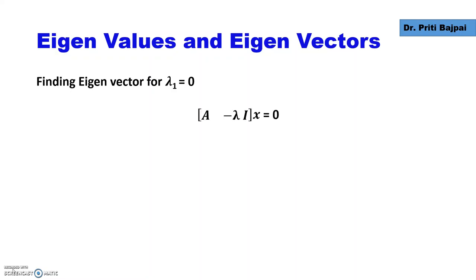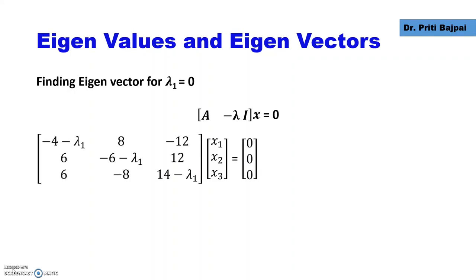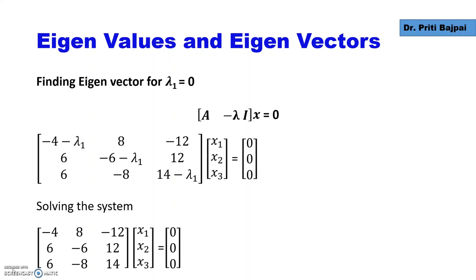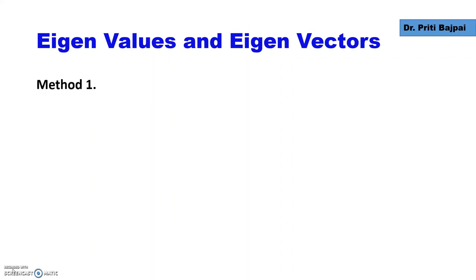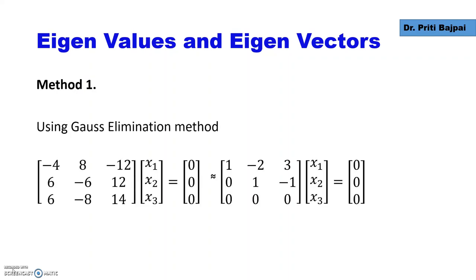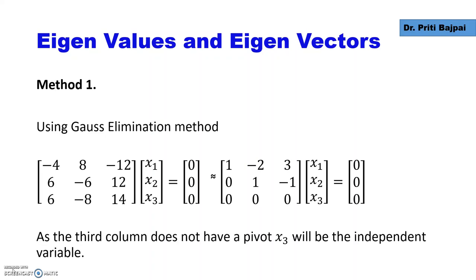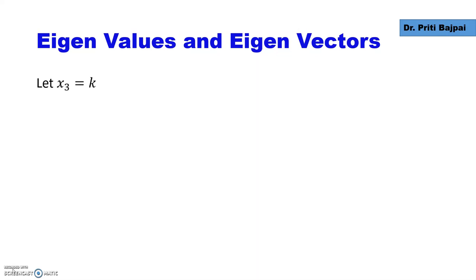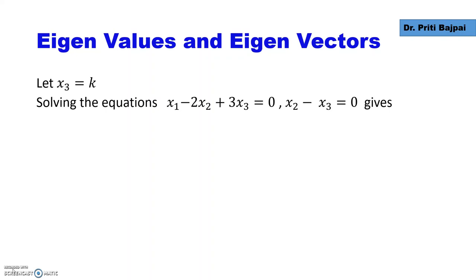Let's find the eigenvectors corresponding to these eigenvalues one by one. When lambda 1 equals 0, we solve (A minus lambda I)x equals 0. We substitute lambda 1 equals 0 into the system, giving us a matrix. Using Gauss elimination, we reduce the matrix to row echelon form and solve the equations. The third column does not have a pivot, so x3 becomes our independent variable. We set x3 equal to k, then form the equations: x1 minus 2x2 plus 3x3 equals 0, and x2 minus x3 equals 0.